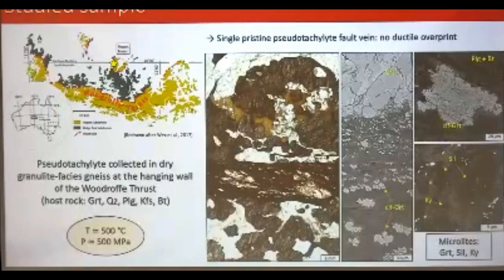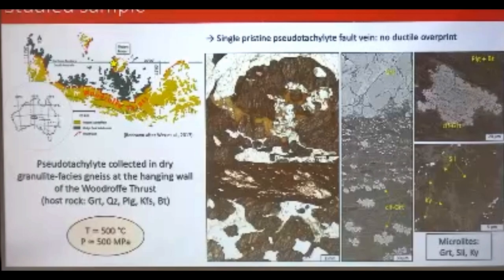Here is a scan of the thin section showing the pseudotachylyte vein — a single, pristine pseudotachylyte vein with light foliation visible, produced during quenching and not overprinted by any ductile deformation. The pseudotachylyte cross-cuts some large garnets that are intensely fractured. In the backscatter image you can appreciate the pseudotachylyte texture — still a glassy texture with tonalitic microcrysts that increase in size from the margins to the middle. We also have a detail of a tonalitic microcryst and some other inclusions like clinopyroxene.